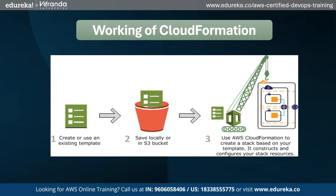For example, suppose you want to create an EC2 instance. Next, you save the template locally or in an Amazon S3 bucket. If you created a template, save it with a file extension like .json, .yml, or .txt.